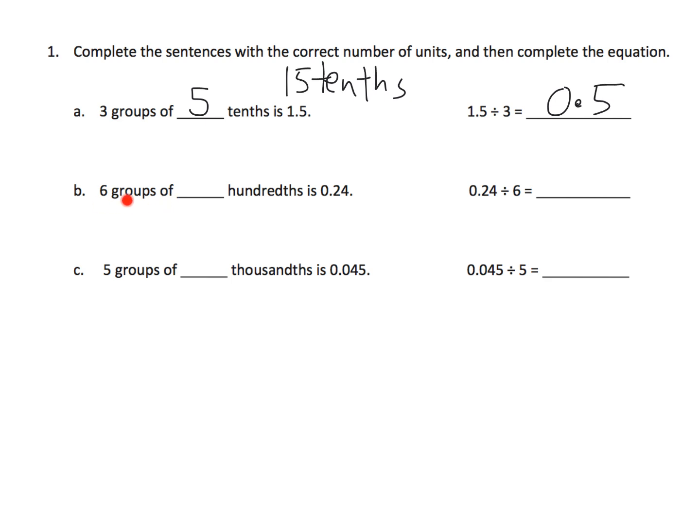Here we go, six groups of how many hundredths is equal to 0.24. We want students to know that that's 24 hundredths, so six groups of 4 hundredths is equal to 24 hundredths. So working it backwards, our answer is 0.04 because that's 4 hundredths.